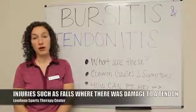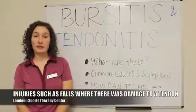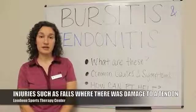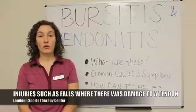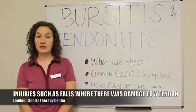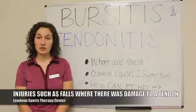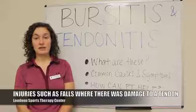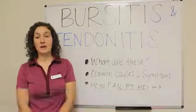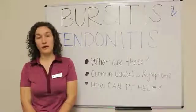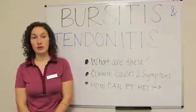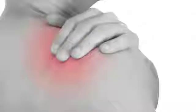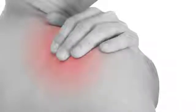With injury — like if you had a fall and you damaged a muscle tendon or even the muscle belly — it causes stress to the muscle tendon. And if you have a fall and land on your hip or your shoulder, you can actually damage part of the bursa.